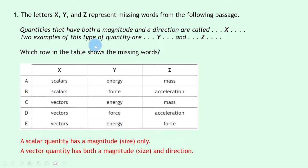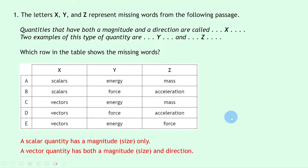So we need two examples of vectors. For C we've got energy and mass, which are both scalars. For E we've got energy, which is a scalar, and force, which is a vector, so it can't be that one. For D we have force and acceleration, which are both vectors because when we describe forces and accelerations we need to state directions. So the answer here is D.